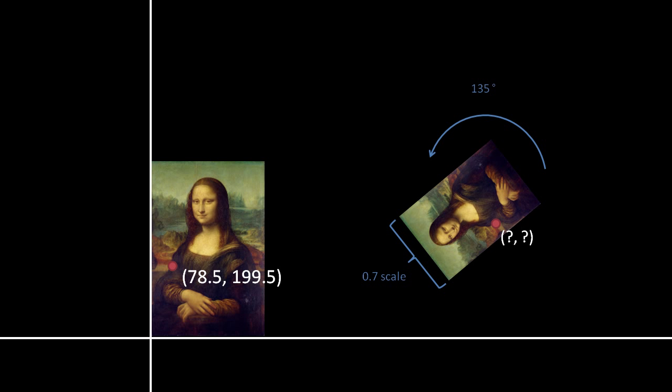So say the source pixel centered at 78.5, 199.5: first, its x and y both get multiplied by 0.7, then using the rotation formula we derived in a previous video, we rotate the coordinate by 135 degrees, and lastly, whatever results from the rotation, we add 800 to its x and 350 to its y to translate it. Do this for every pixel, and we have our transformed image. Using this process, we should be able to render any image in any 2D orientation.